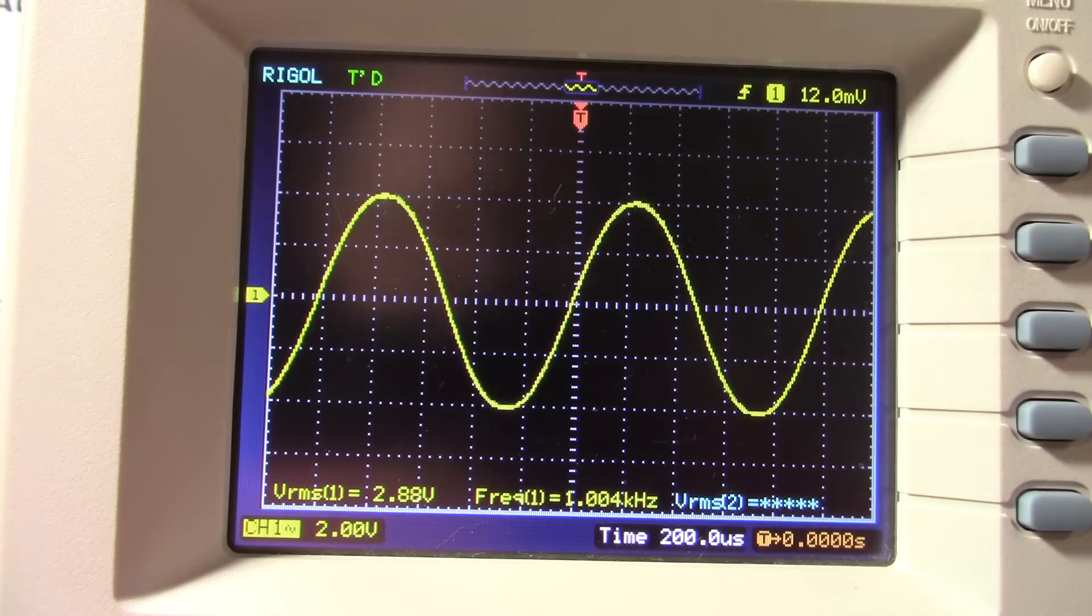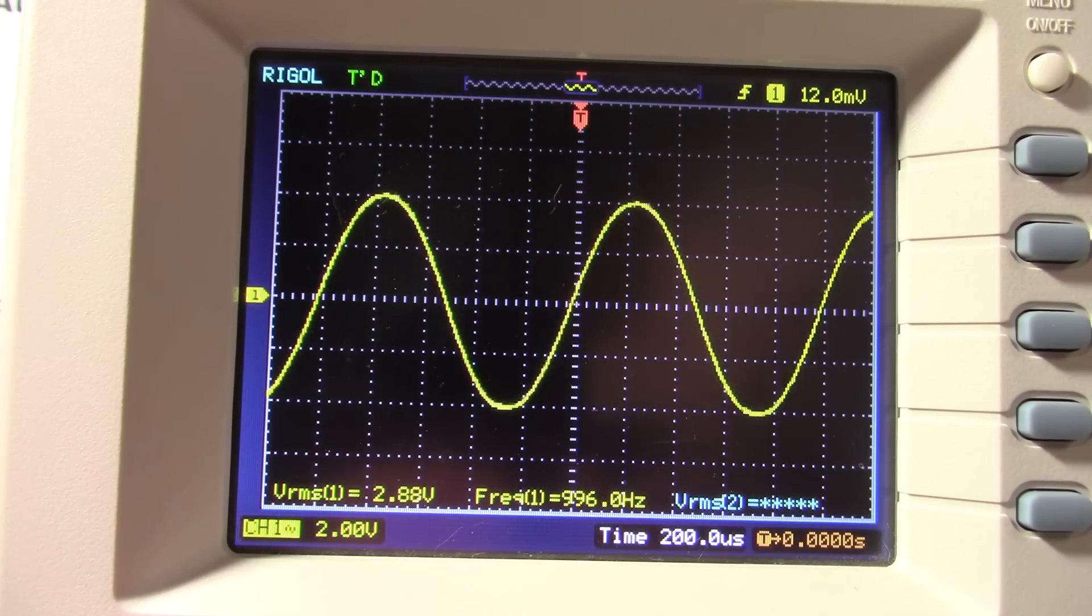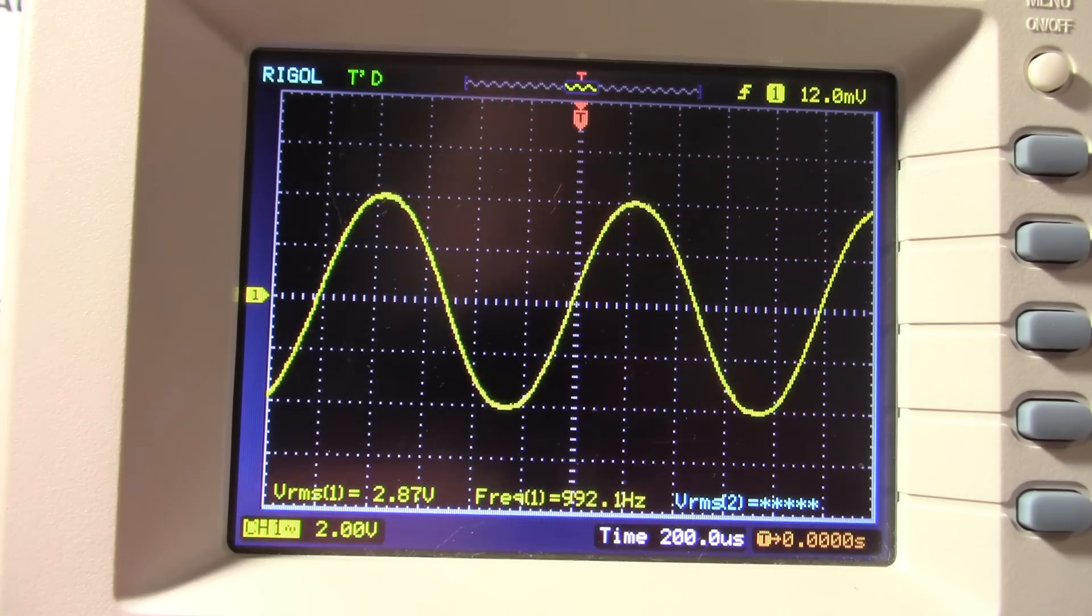So now we're about 2.88 volts RMS. So 2.88 squared divided by 8 ohms. So we're getting a little over a watt. We'll just call it a watt.